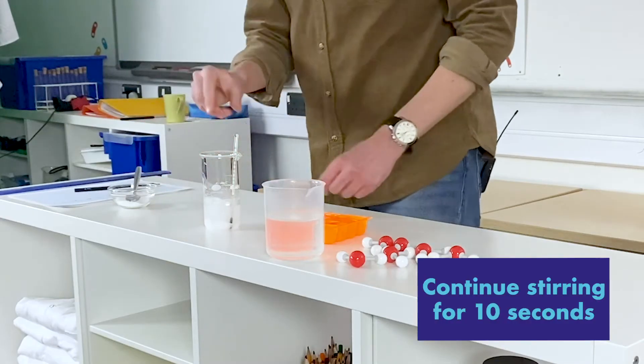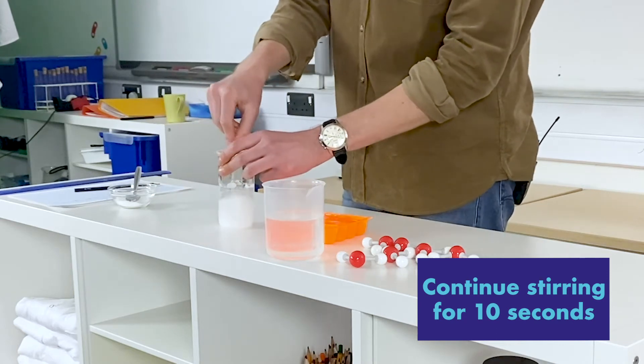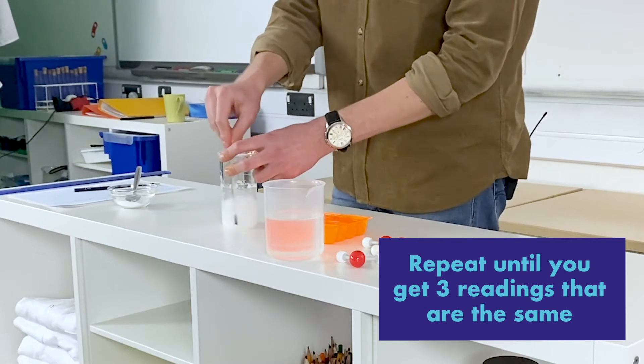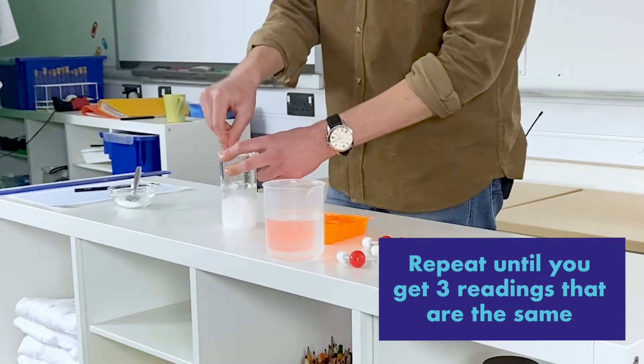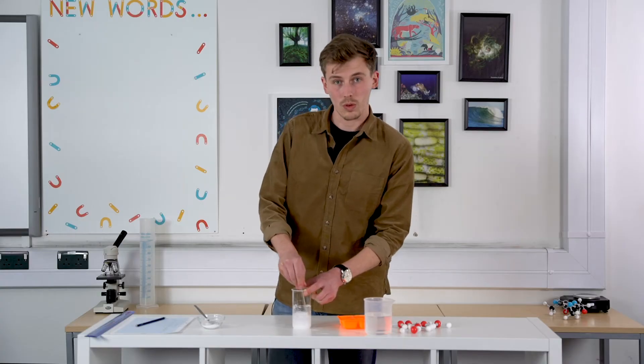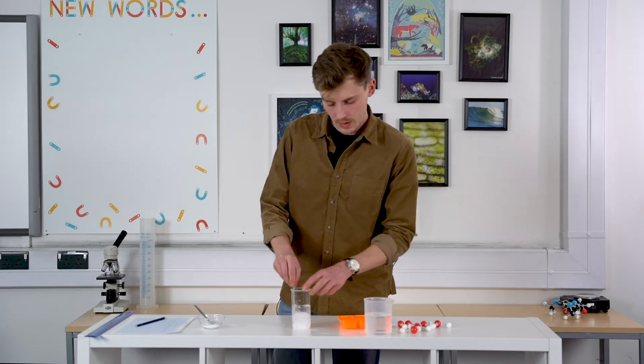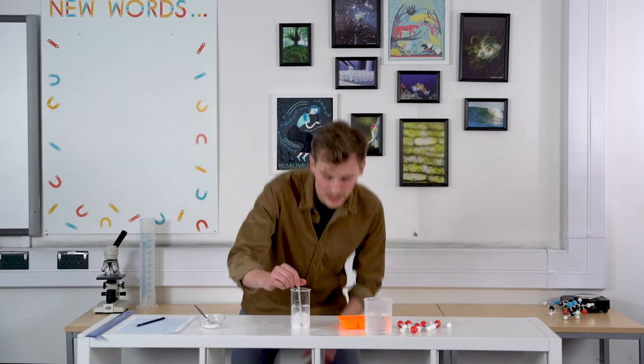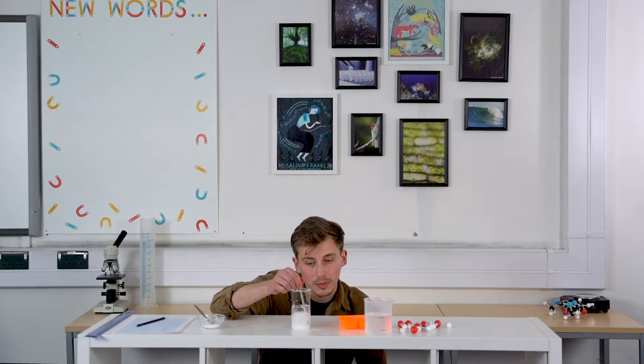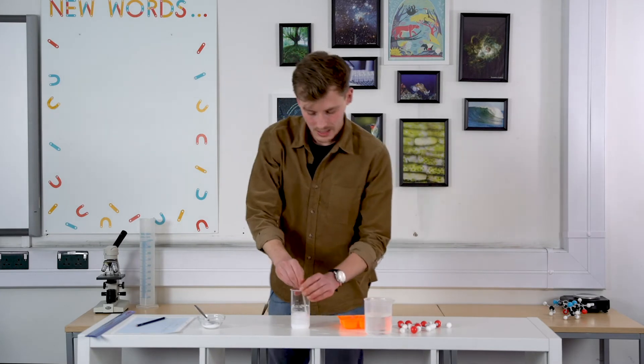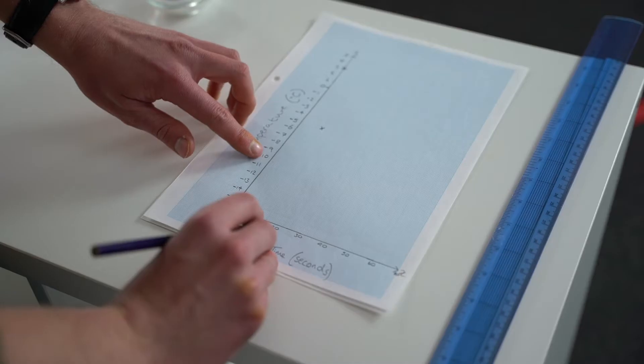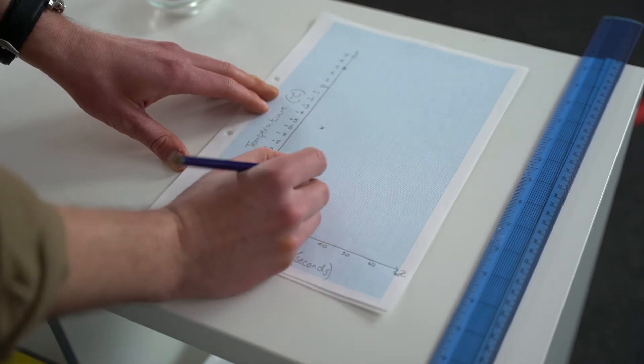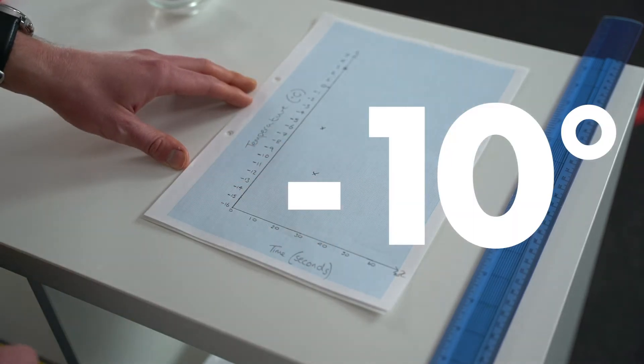Perfect. And then we're going to get stirring again for another 10 seconds. And we're going to keep doing this, stirring for 10 seconds, taking a measurement, stir for 10 seconds, take a measurement. And once the temperature starts to stabilize, so once the temperature doesn't drop anymore, we will take a look at our graph. That's about 10 seconds. So what have we got? So we've already dropped down to minus 10 degrees Celsius. So I'm going to mark minus 10 at a time of 20 seconds. Perfect. I'm going to start stirring again.